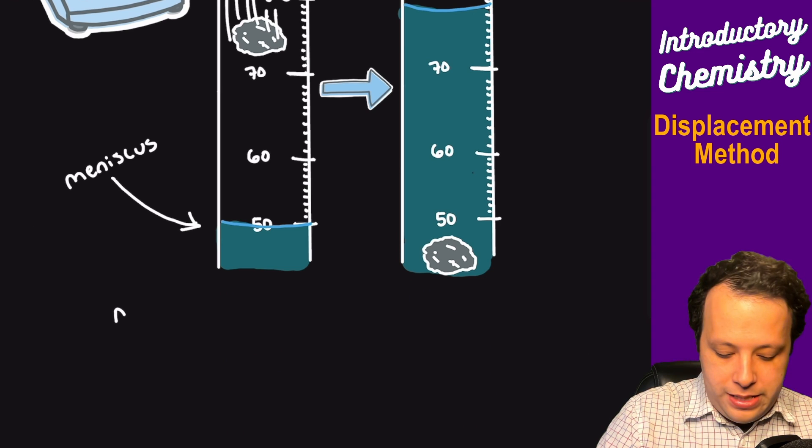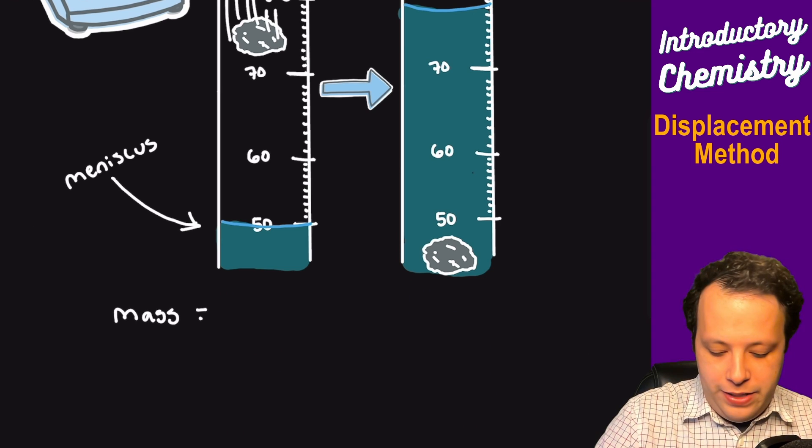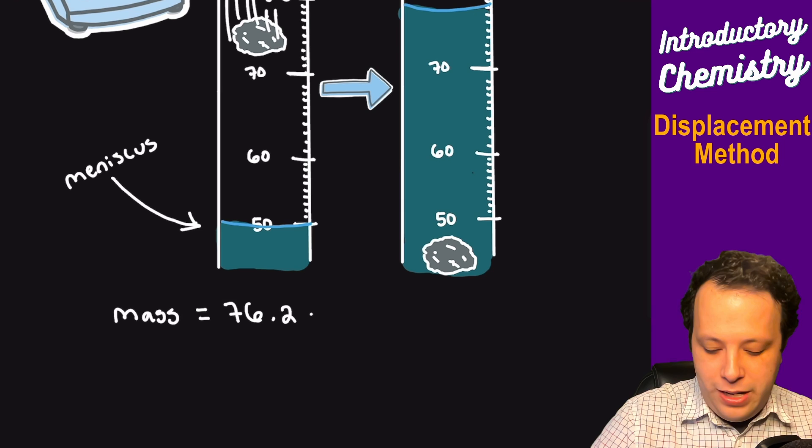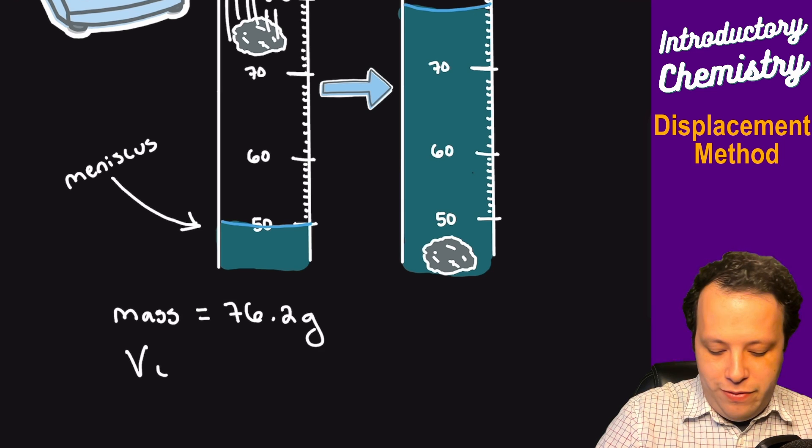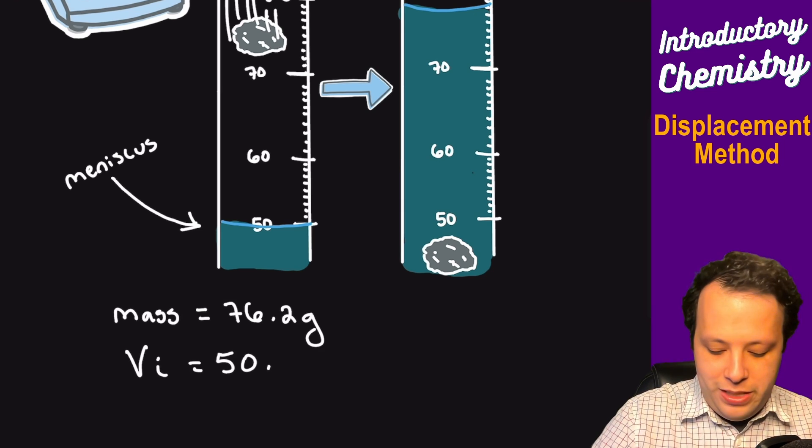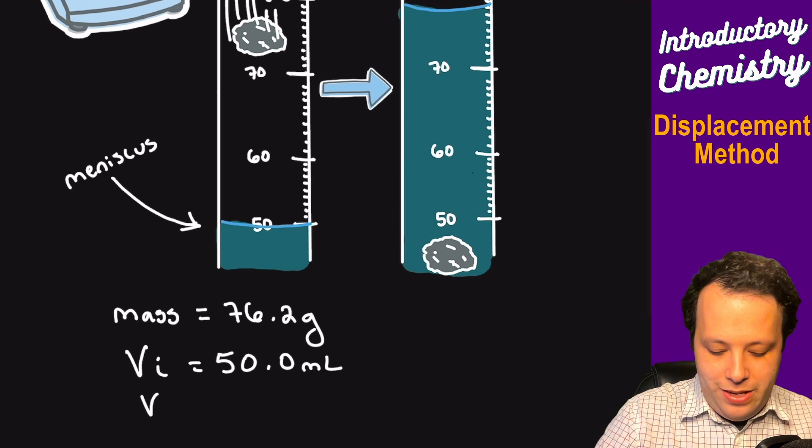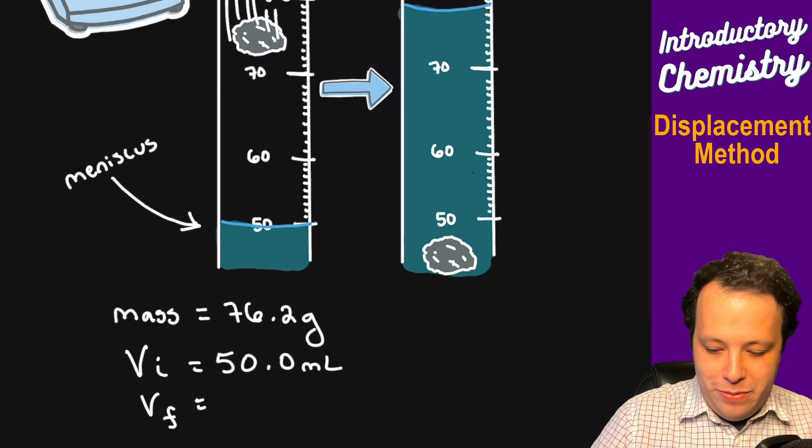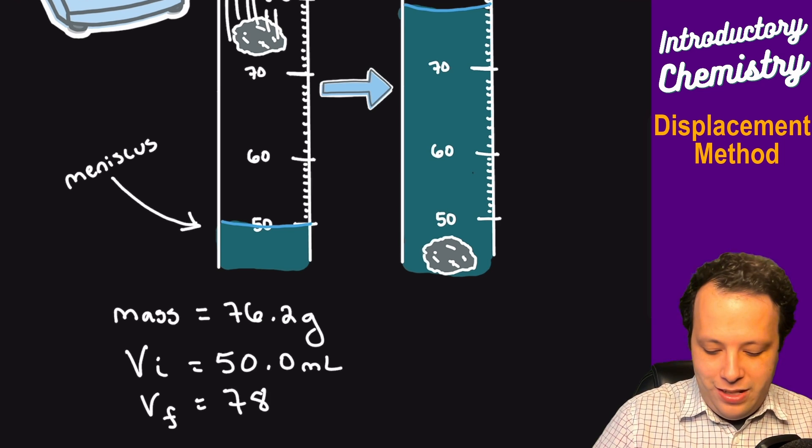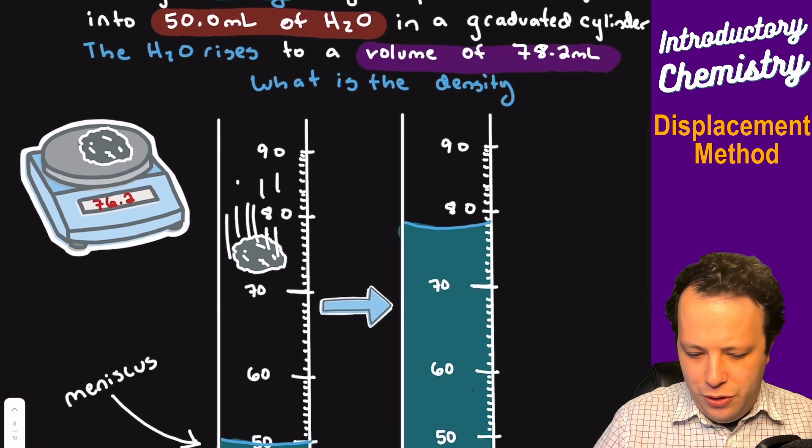So mass was 76.2 grams. Initial volume was 50.0 milliliters, and then the final volume was 78.2 milliliters.